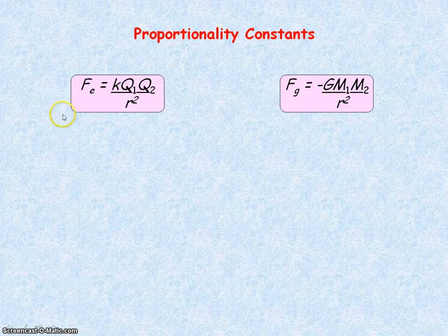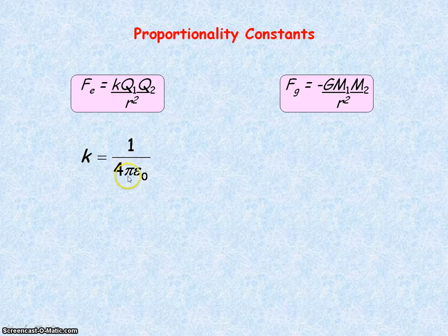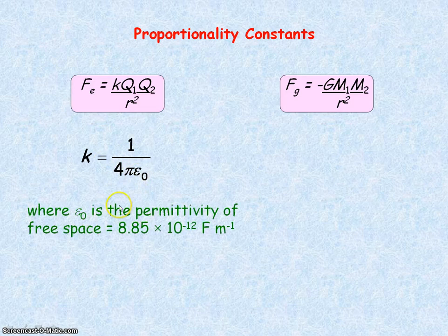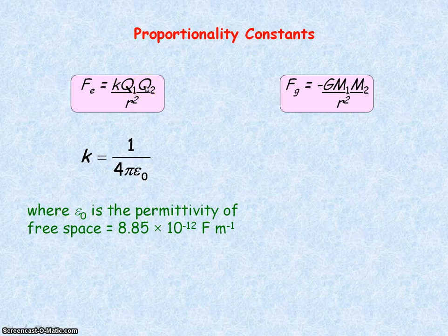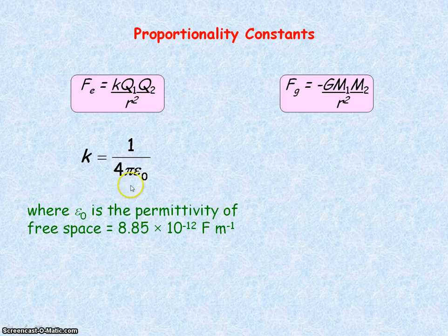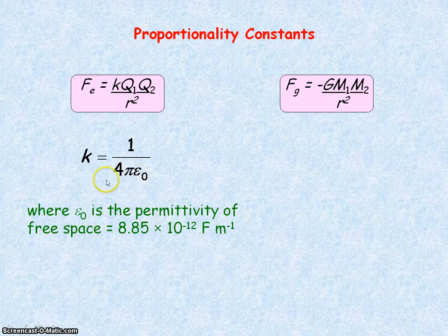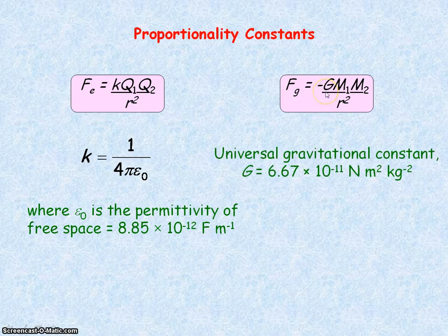The proportionality constant for electric fields is k, which equals 1 divided by 4π epsilon-zero, where epsilon-zero is the permittivity of free space. This constant applies when the two charges are separated by free space or vacuum; in air, the permittivity is approximately equal to that of free space, so the same value can be used. The proportionality constant for gravitational fields is capital G, known as the universal gravitational constant.